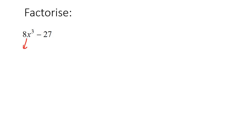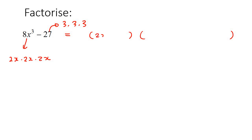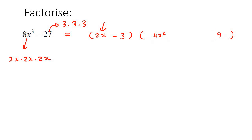Here's our next example. I know that 2x times 2x times 2x gives us 8x cubed, and that 3 times 3 times 3 gives us 27. So we open a small bracket and a big bracket. In the small bracket, put 2x take away 3. In the big bracket, square 2x to get 4x squared, square 3 to get 9, and in the middle multiply them to get negative 6x — but change the sign to positive. This last term is always a positive.